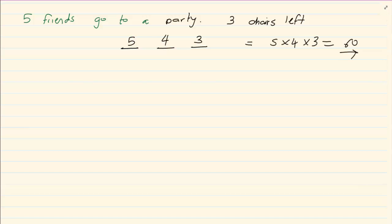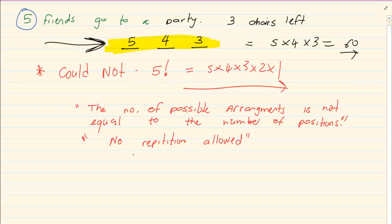What I'm trying to show you is that you could not do this. You can't do that. So you can't say five factorial. The number of possible arrangements is not equal to the number of positions you have and there is no repetition.